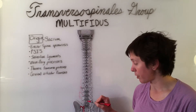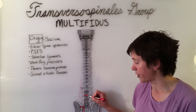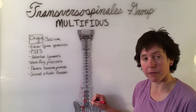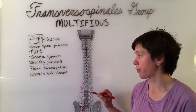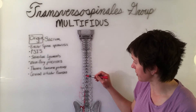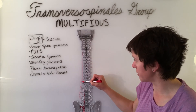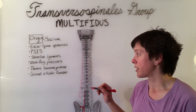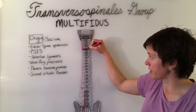Additional origins include the mammillary processes, which are on the lumbar vertebrae, the thoracic transverse processes, and the cervical articular processes.